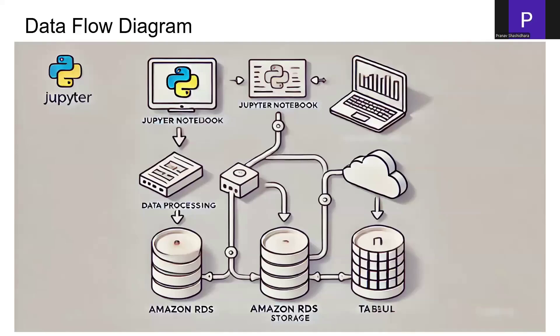I'll be explaining the data flow in our system, as we are using Amazon AWS as well as Tableau along with our Jupyter notebook. We first take the data from Kaggle, then perform a few pre-processing steps using Jupyter notebook, and push the data to our Amazon relational database — in our case a PostgreSQL server.